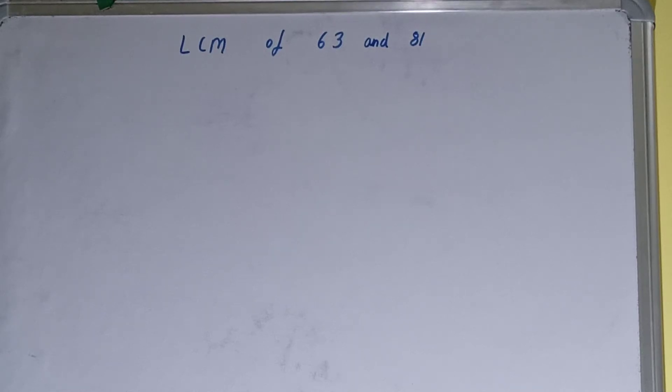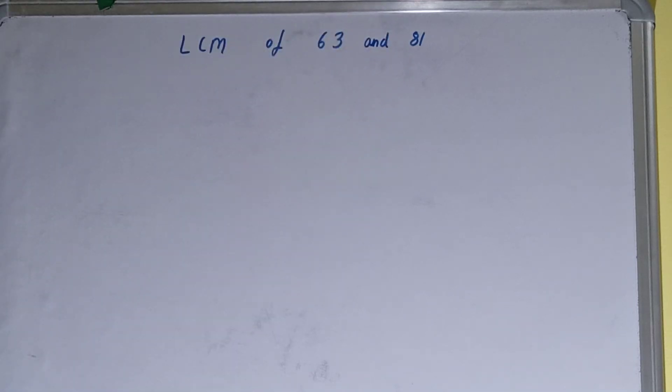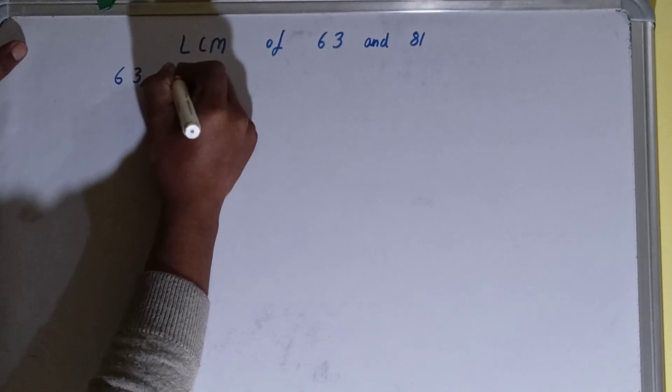Hello friends, and in this video I'll be helping you with the LCM of the numbers 63 and 81. So let's start. To find it out, we first need to write both the numbers like this: 63, 81.